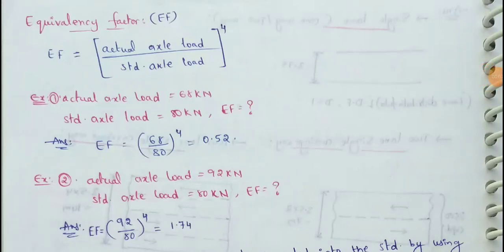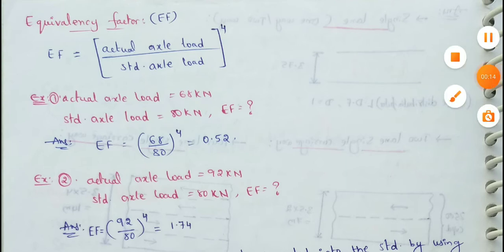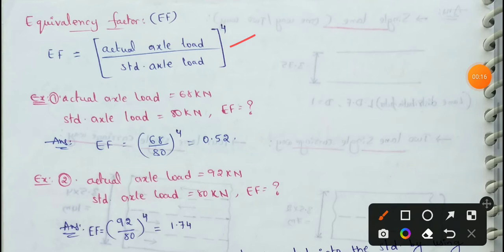Next topic: equivalency factor. In flexible pavement design, equivalency factor is an important topic. The equivalency factor is defined as the actual axial load divided by the standard axial load, raised to the power of 4. It represents the damaging factor for different axial loads with respect to the standard load.